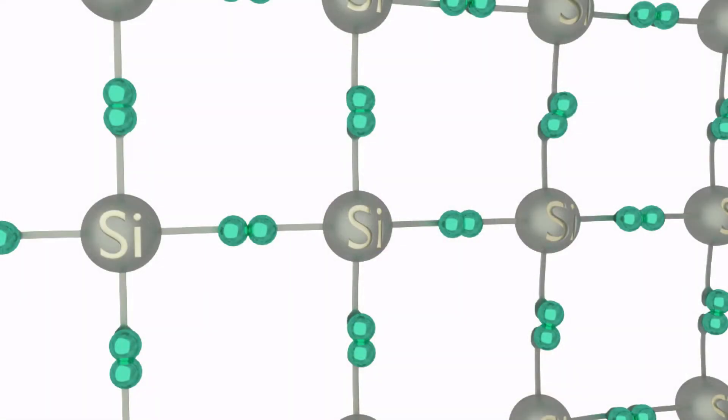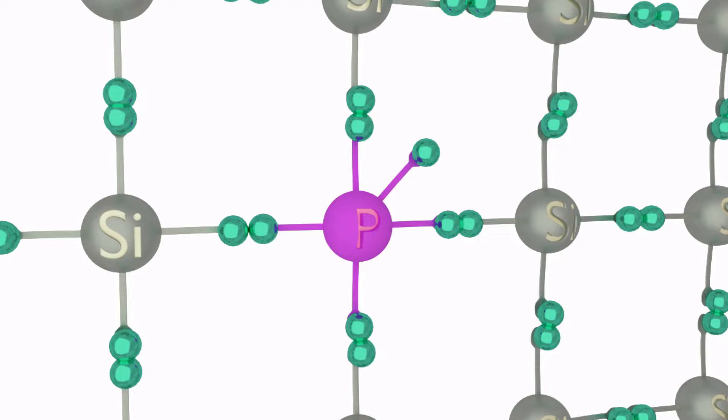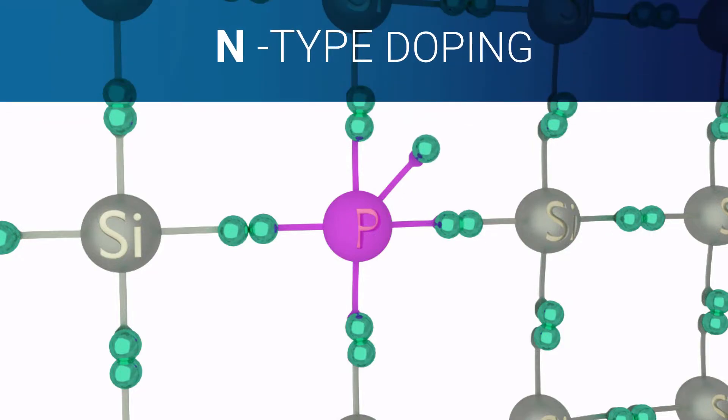In this case, we consider, for example, a phosphorus atom that replaces a silicon atom into the lattice. Unlike silicon, the phosphorus atom has five electrons in its outer shell. And for this reason, an electron will not be interested in the covalent bond and will be free to move within the lattice. This is known as type N doping.